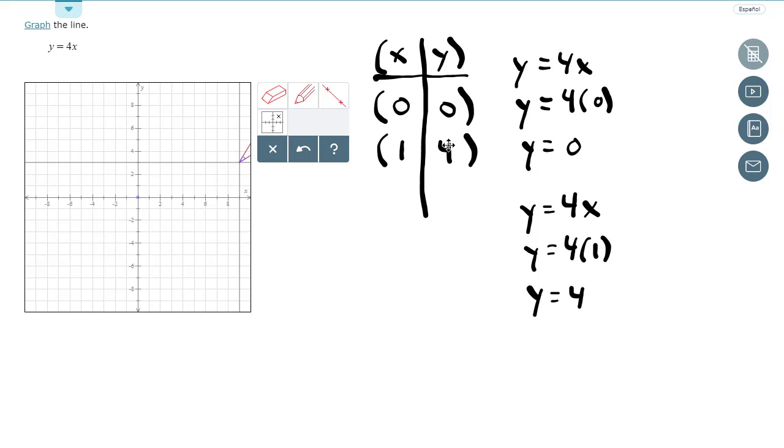And then the other point is 1, 4. So I go right 1, up 4, put a point there. Now I have my two points. I just got to draw my line. So I click on the line tool. And then I click on each point. And then I have my line.